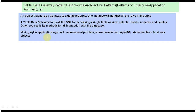There are three important points. First, an object that acts as a gateway to a database table — one instance will handle all the rows in the table. Second, a Table Data Gateway holds all the SQLs for accessing a single table or view, including selects, inserts, updates, and deletes. Other code calls the Table Data Gateway methods for all interaction with the database.